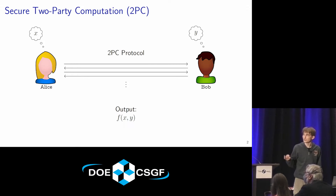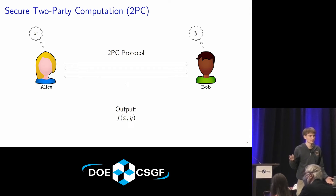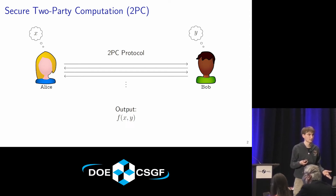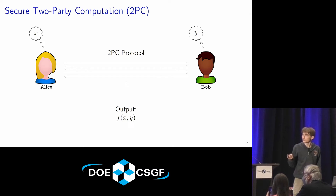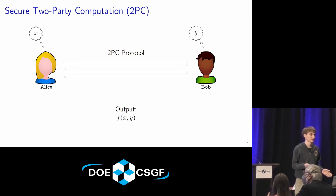They run a two-party computation protocol, sending messages back and forth. Applications include situations where you either mistrust or, due to regulations, you may not be able to get all the data required for a calculation owned by a single entity at once. For machine learning, you may want to get as large a dataset as possible, but people may not want to just give you their data.